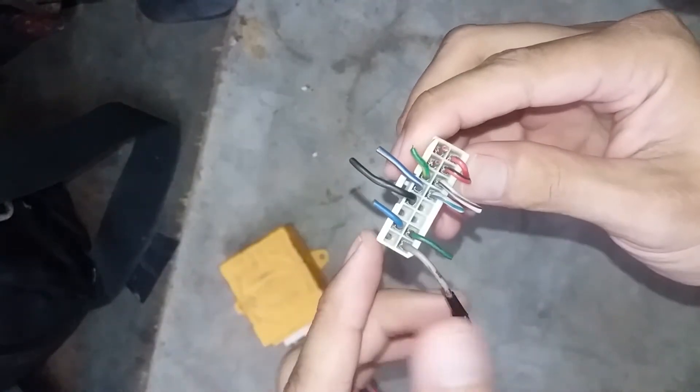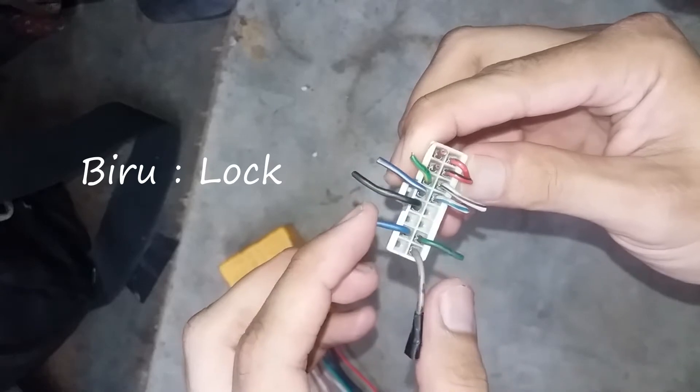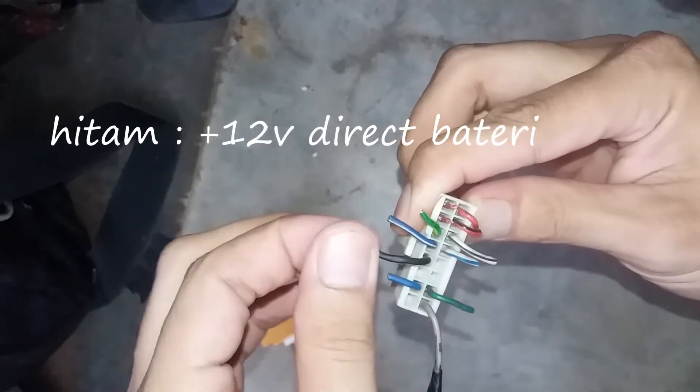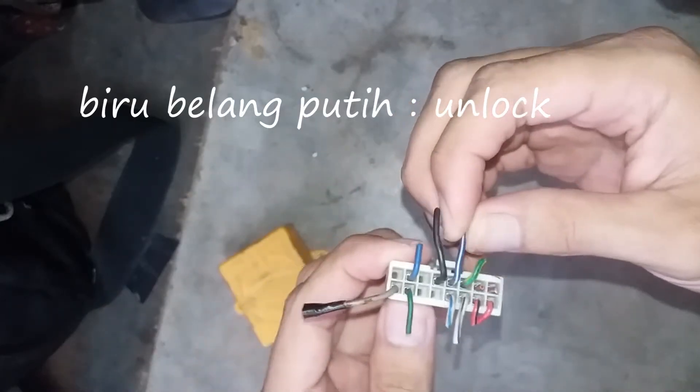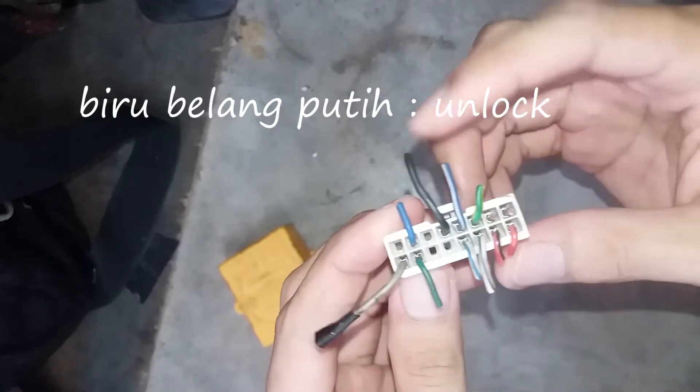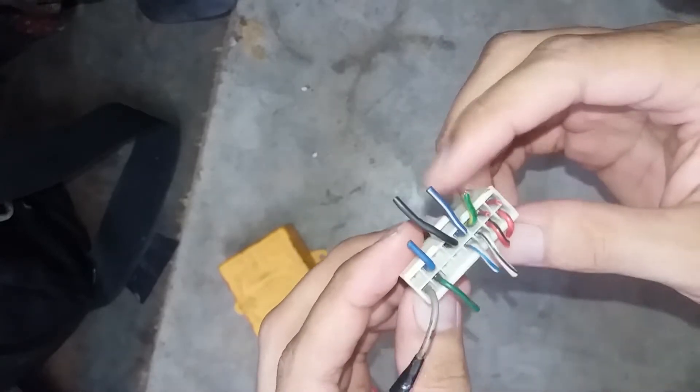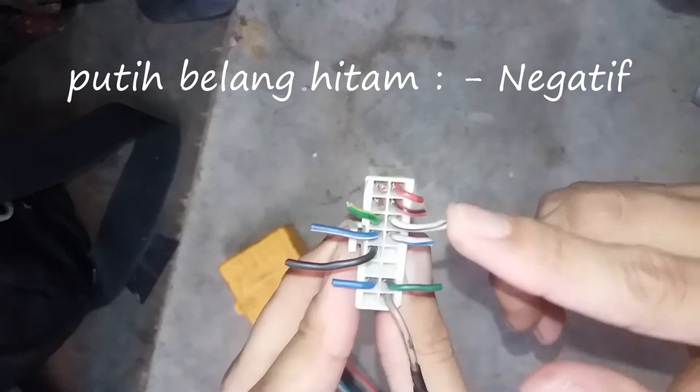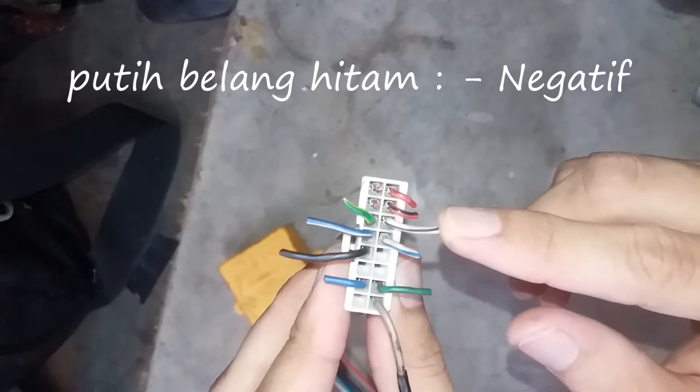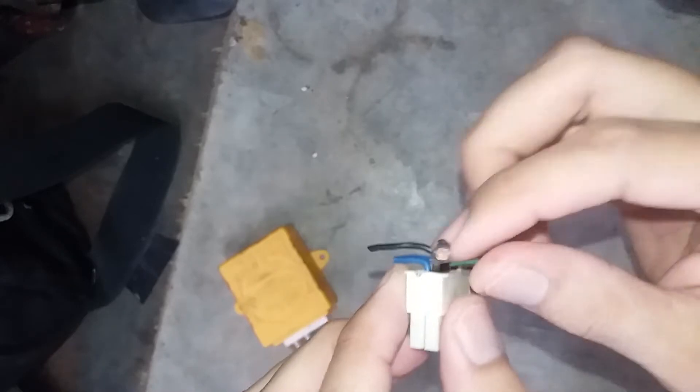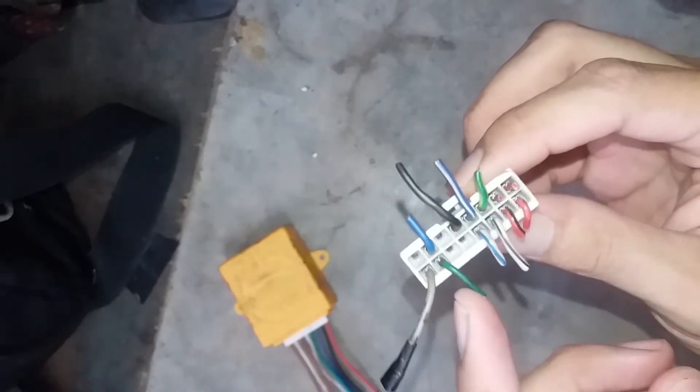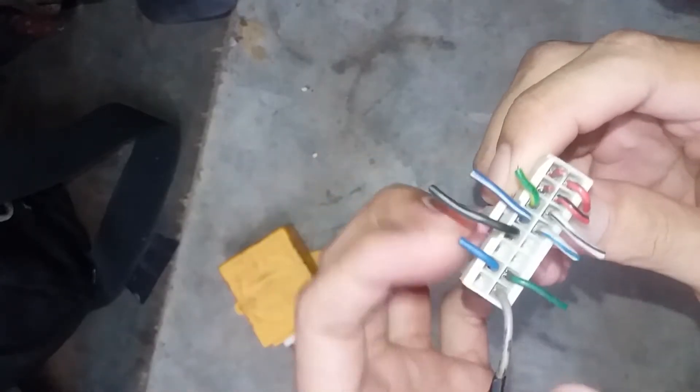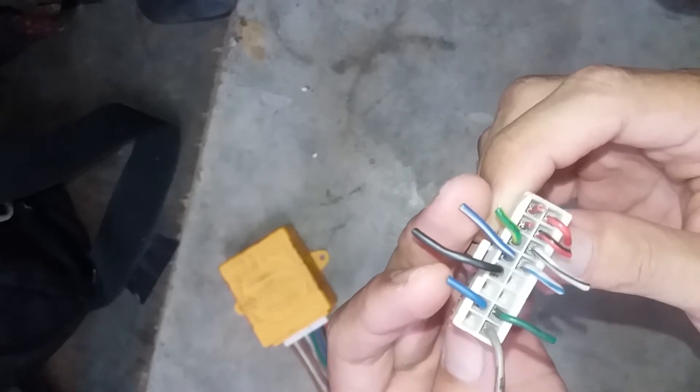Let's look at the colors first. Blue is Lock. Black is 12 volt positive. Blue with white stripe is Unlock. White with black stripe is Negative. And green is from the switch. The blue lock and unlock wires are from the actuator, which sits inside the door and moves the lock mechanism.